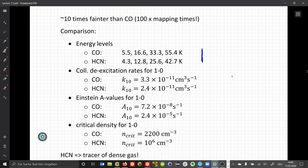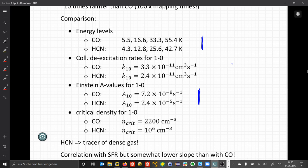The collision rates to excite the first level are also comparable. Under LTE, we expect significant population of the upper levels. The A values are very different for HCN—the lifetime of the first rotational level is three orders of magnitude lower compared to CO. Related to that, the critical density for HCN is three orders of magnitude higher, which is the ratio between the collision and spontaneous emission probabilities. The consequence is that HCN is a tracer of dense gas only.